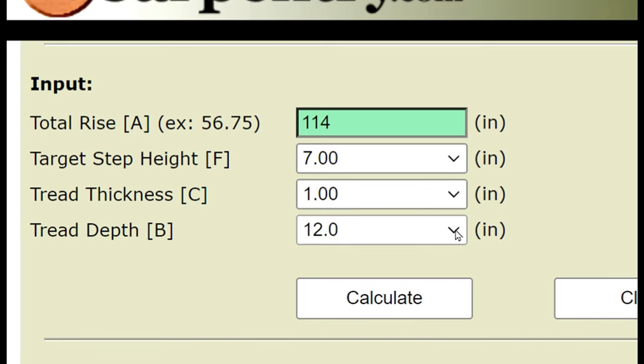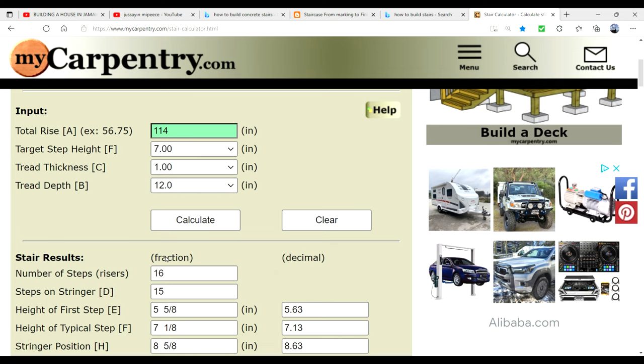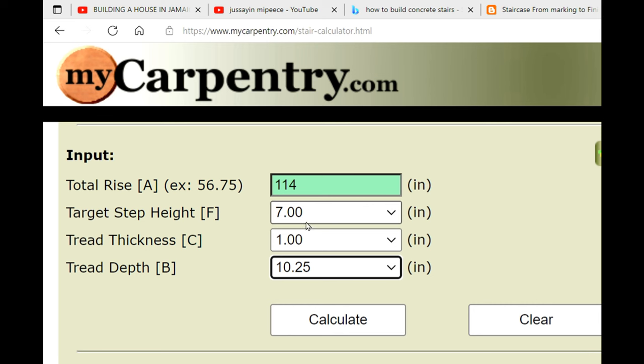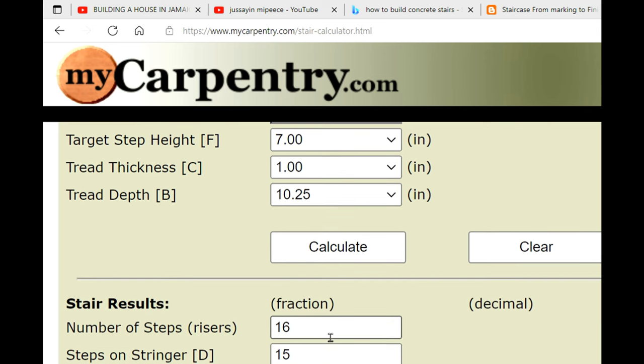Now the tread depth we are going to keep that at 10.25 inches so those are the targets. Now we're going to hit calculate. When we hit calculate we get the results down the bottom here.